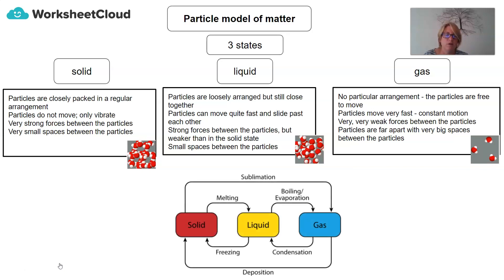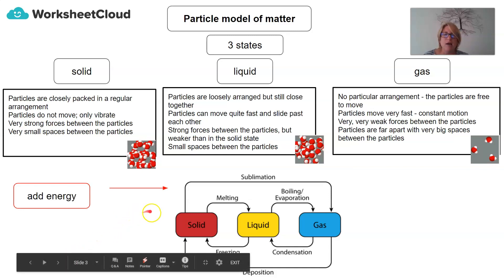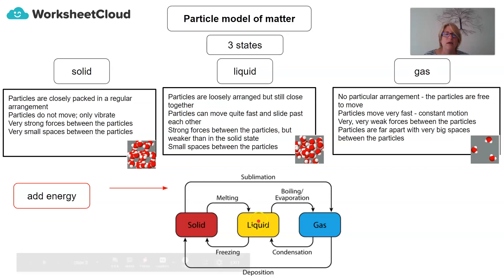If we have a look at the particle model of matter, we can see what happens when we add energy to a solid. When we add energy to a solid, it undergoes a process known as melting and it changes phase to a liquid. And when we add energy to a liquid, it goes through a boiling or phase of evaporation and it turns into a gas. It is also possible for a solid to turn directly into a gas via a process known as sublimation.